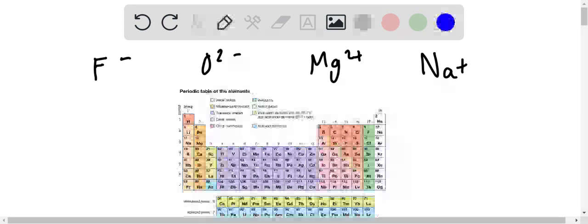Fluorine has an atomic mass of 9, and because it's F minus, that means it gained an electron, so it's 10 electrons. Same with oxygen: atomic mass being 8, gained 2 electrons, so 10. Magnesium has 12, lost 2 electrons, so 10. Sodium has an atomic mass of 11, lost 1 electron, so 10.